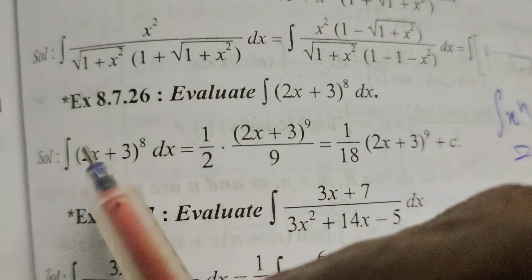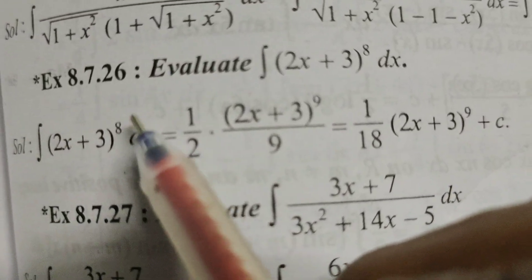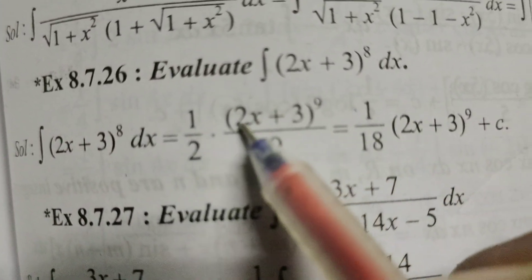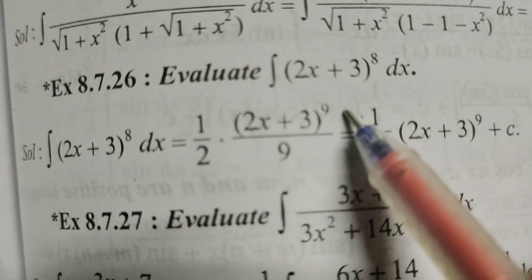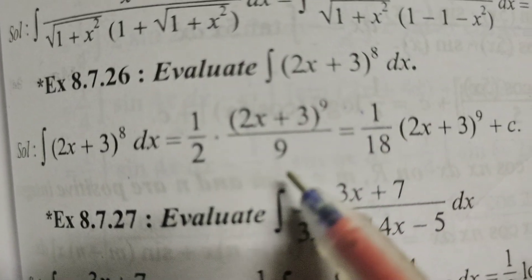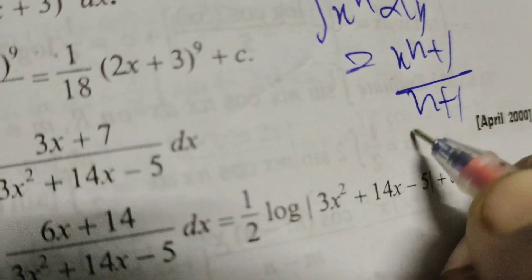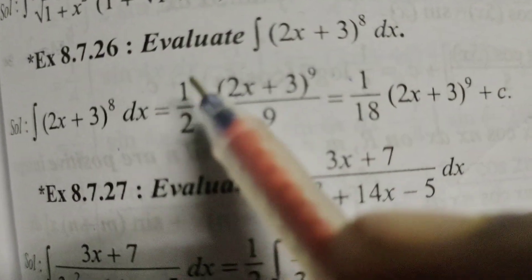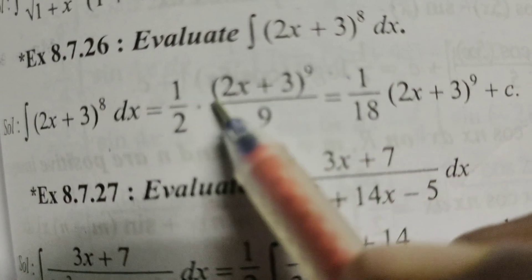So, (2x + 3)^(8+1), that is (2x + 3)^9 divided by 9. Here also, 8 plus 1 is 9. Again, differentiating 2x + 3 gives 2.